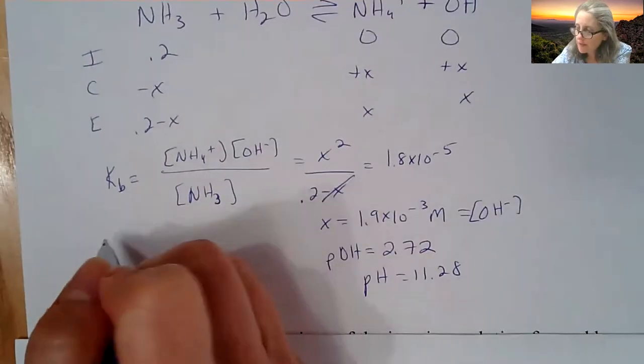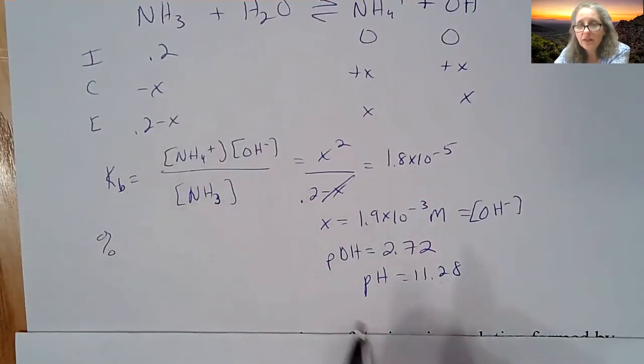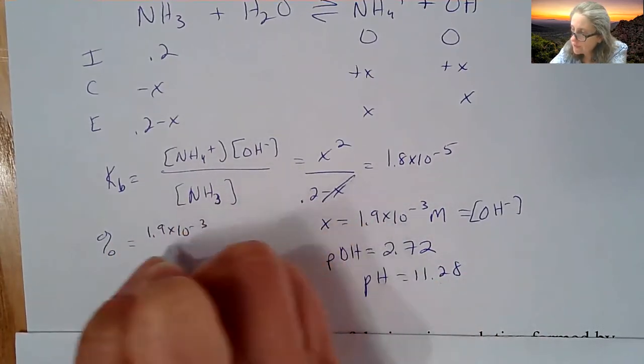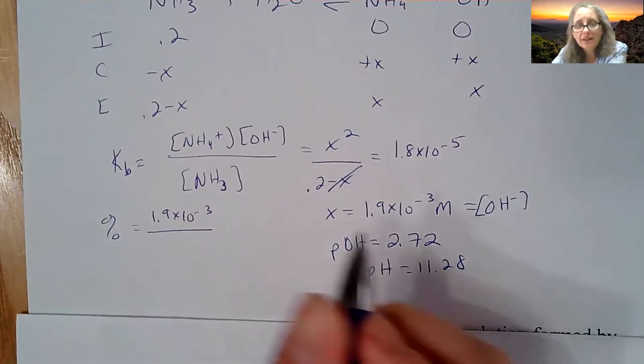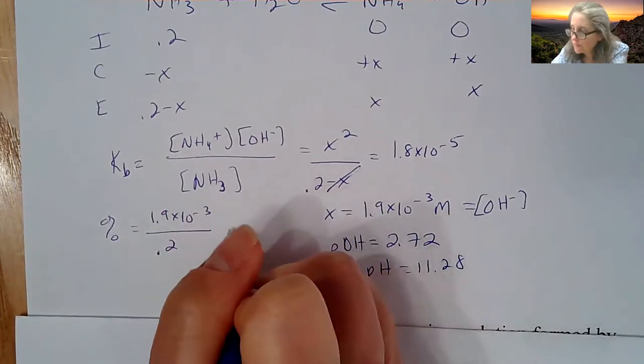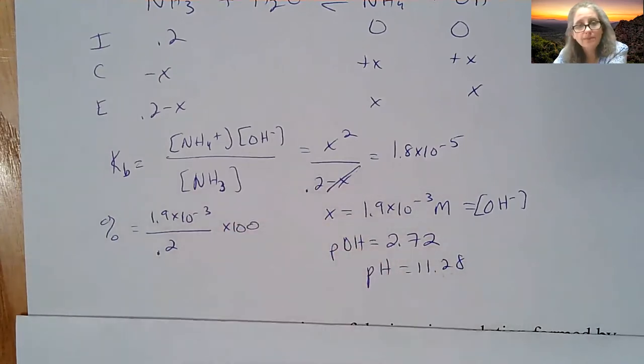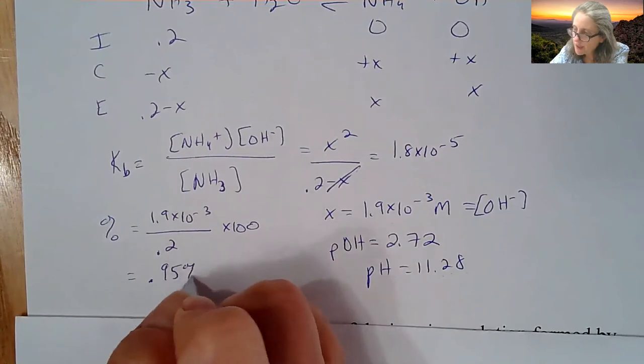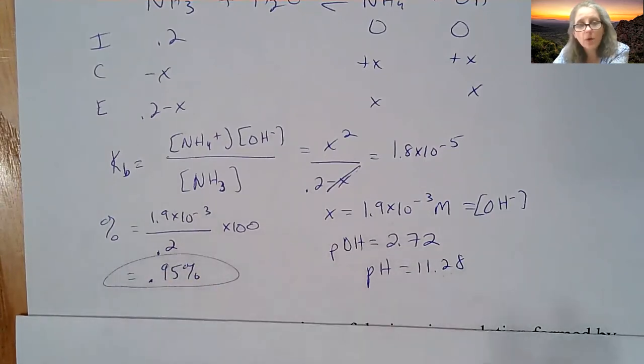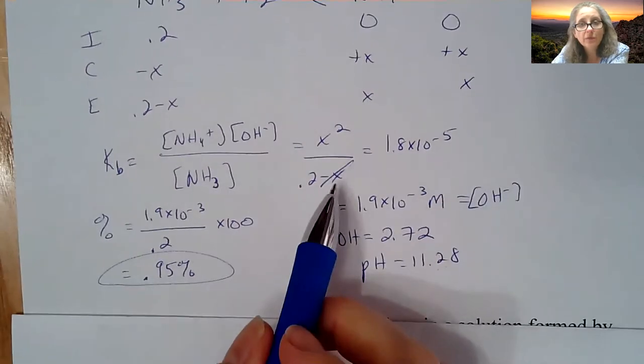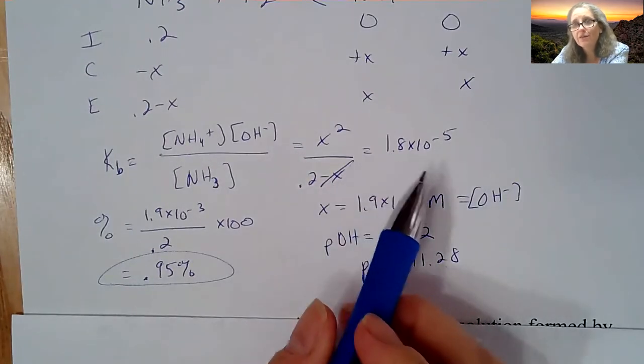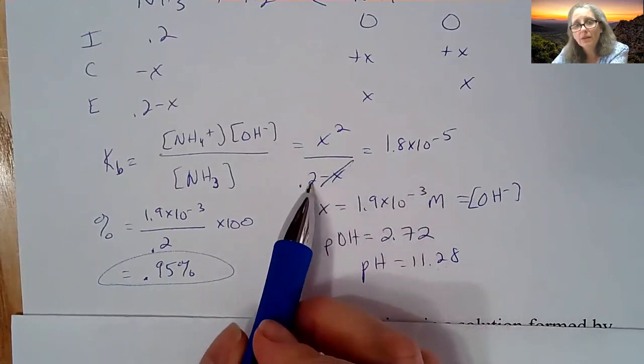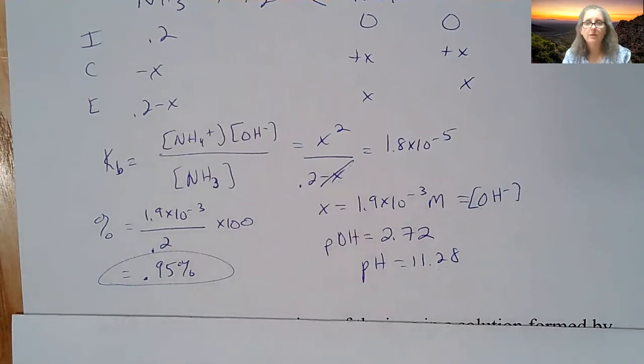In terms of your percent ionization, let's see if I can cancel it out. I'm going to take my X, which is 1.9 times 10 to the negative third. That goes on top. My initial concentration goes on the bottom, 0.2, and multiply that by 100. So that comes out to be about 0.95%. That's less than 1%, so it is okay for me to cross out that X.